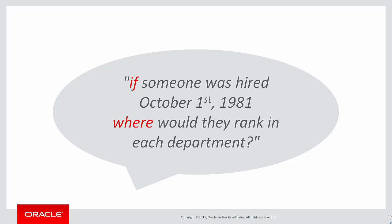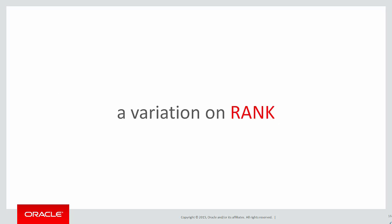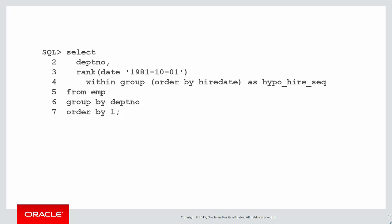What if this is the requirement: I want to know if someone was hired on October 1st, 1981 — where would they rank in each department? We have no row that says October 1st, 1981. We want to know if there was a row, where would it rank? It's actually just a variation on the rank function — this is a hypothetical rank.